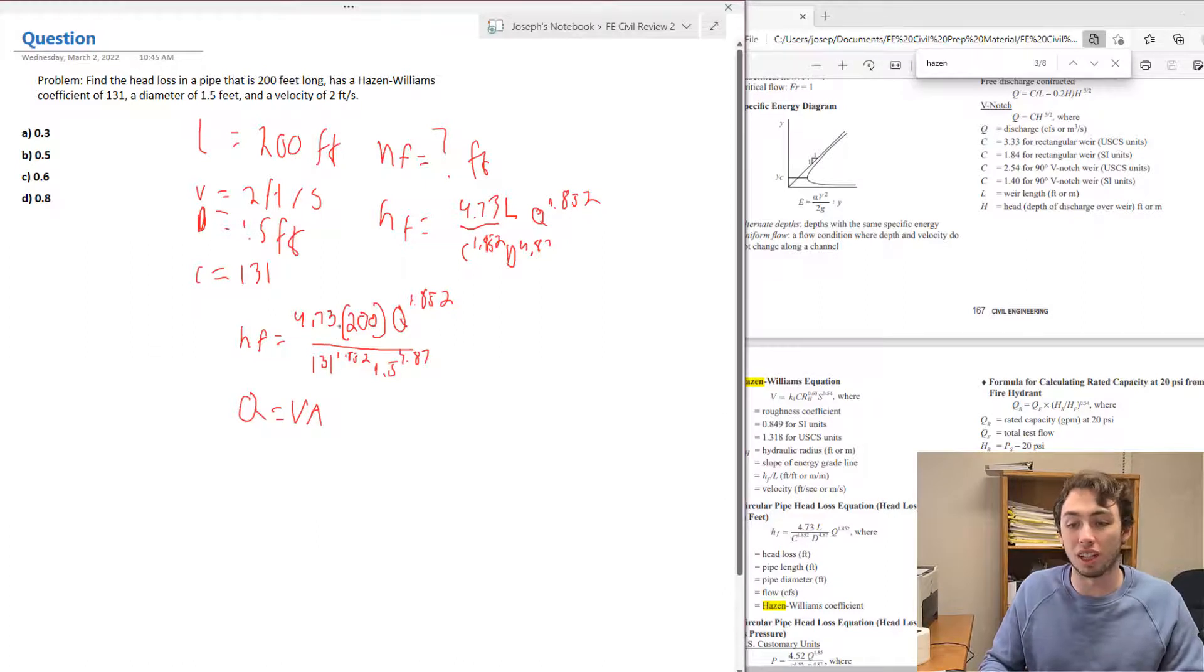We did have a pipe velocity, so we can take 2 and multiply that by the area, pi d squared over 4, to help us find Q. So if we insert the diameter of 1.5 into this equation...